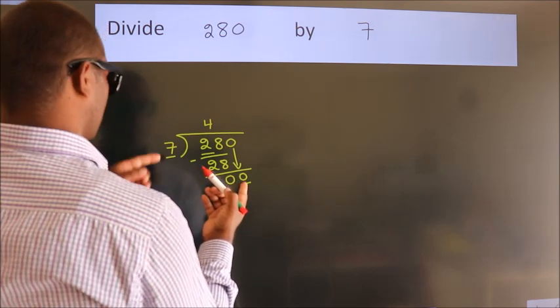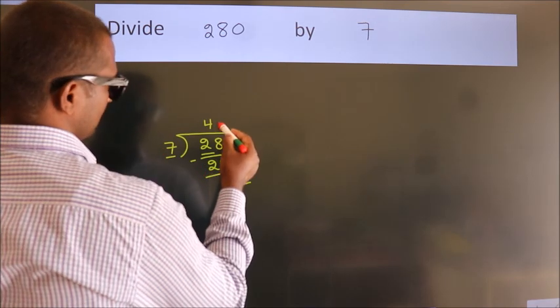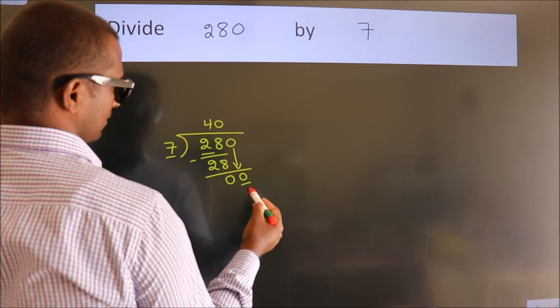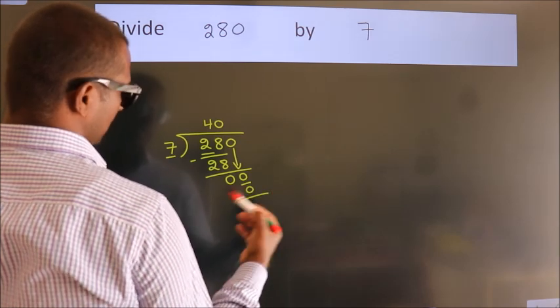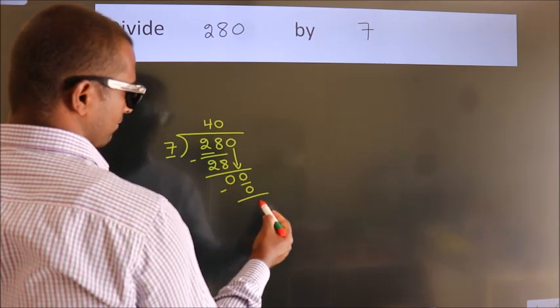When do we get 0? In the 7 table. 7 times 0, 0. Now we subtract. We get 0.